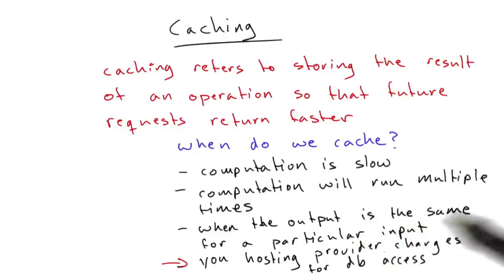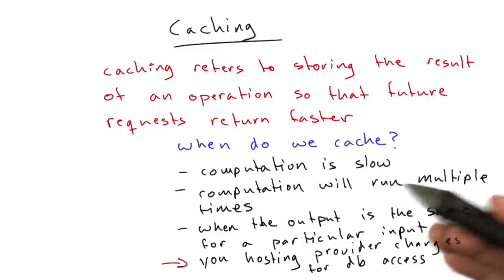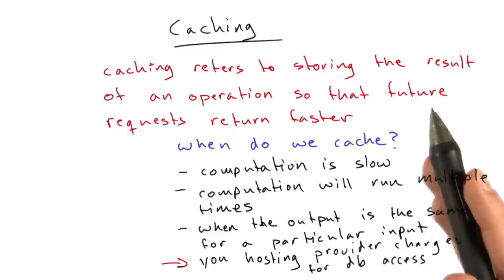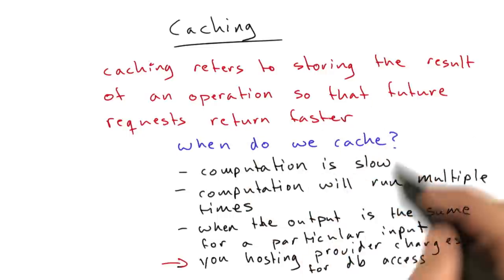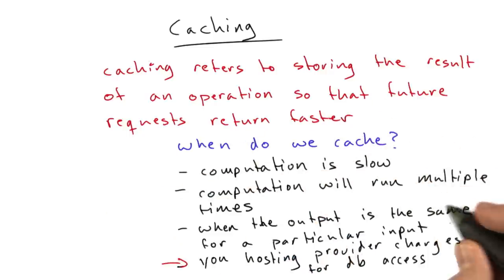So, whenever you have a situation where you have a slow computation that you're running multiple times with the same output over and over, you should cache it. You should store that result somewhere else so that you don't have to run that computation over and over. So, let's talk about how that algorithm looks.